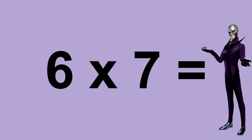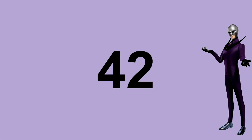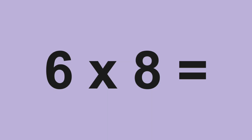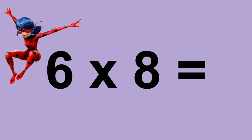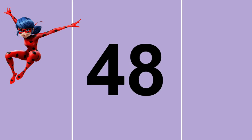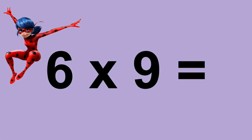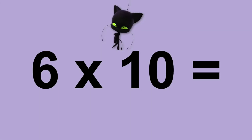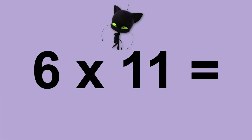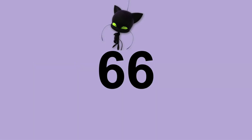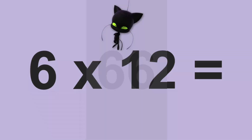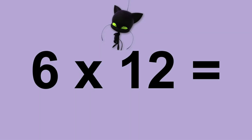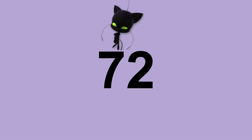Six times seven equals forty-two. Six times eight equals forty-eight. Six times nine equals fifty-four. Six times ten equals sixty. Six times eleven equals sixty-six. Six times twelve equals seventy-two.